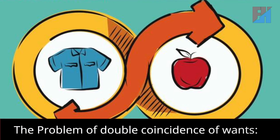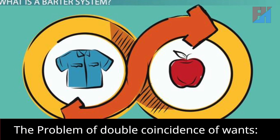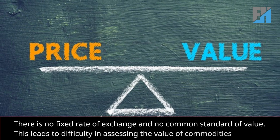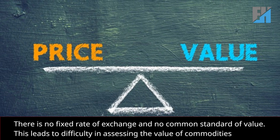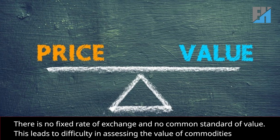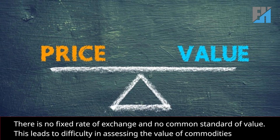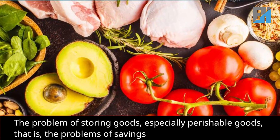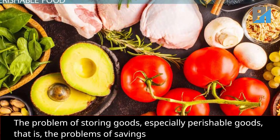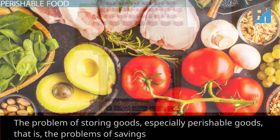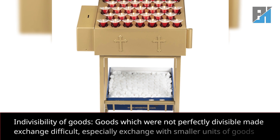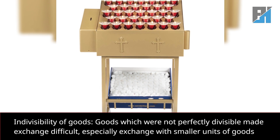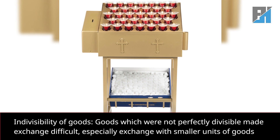Problems of trade by barter — that is why barter was replaced by the use of money. The problem of double coincidence of wants. There is no fixed rate of exchange and no common standard of value; this leads to difficulty in assessing the value of commodities. The problem of storing goods, especially perishable goods — that is the problem of savings.